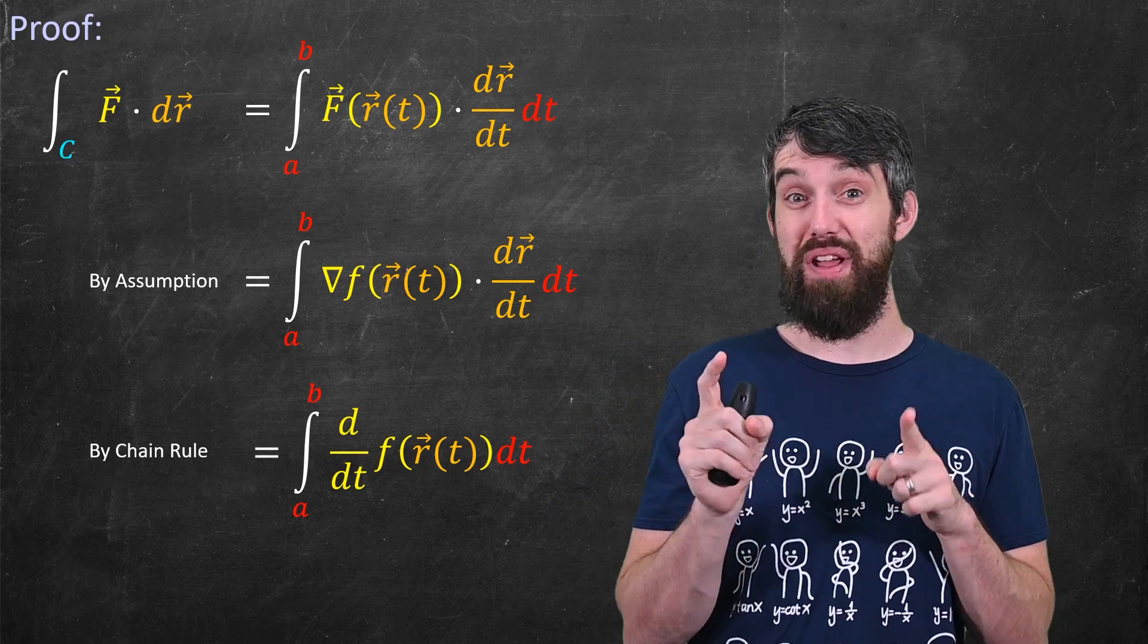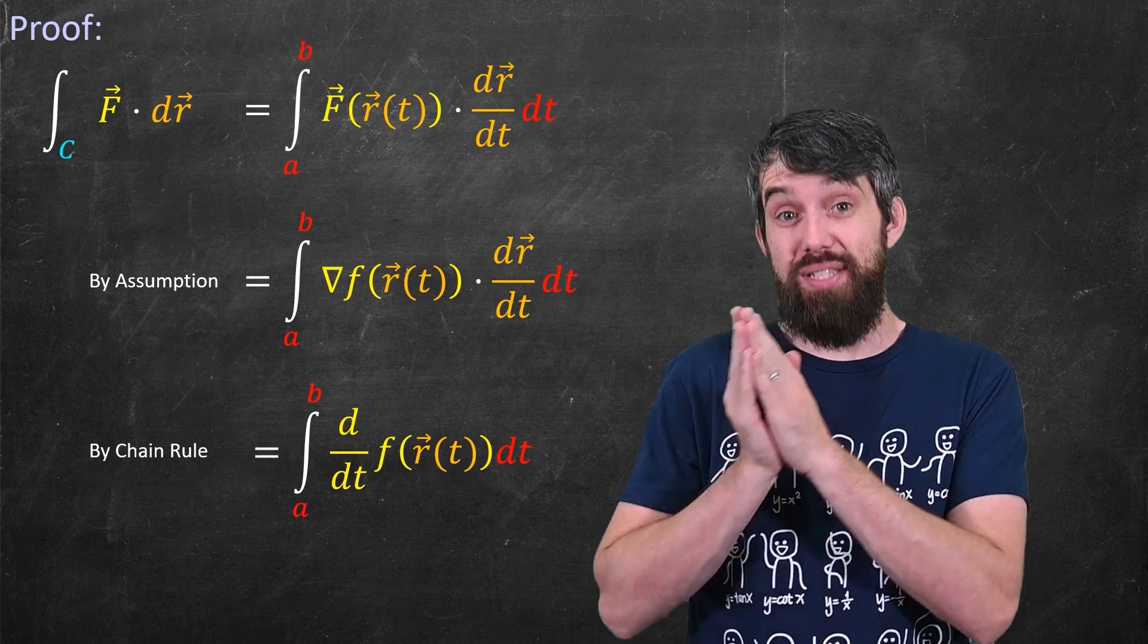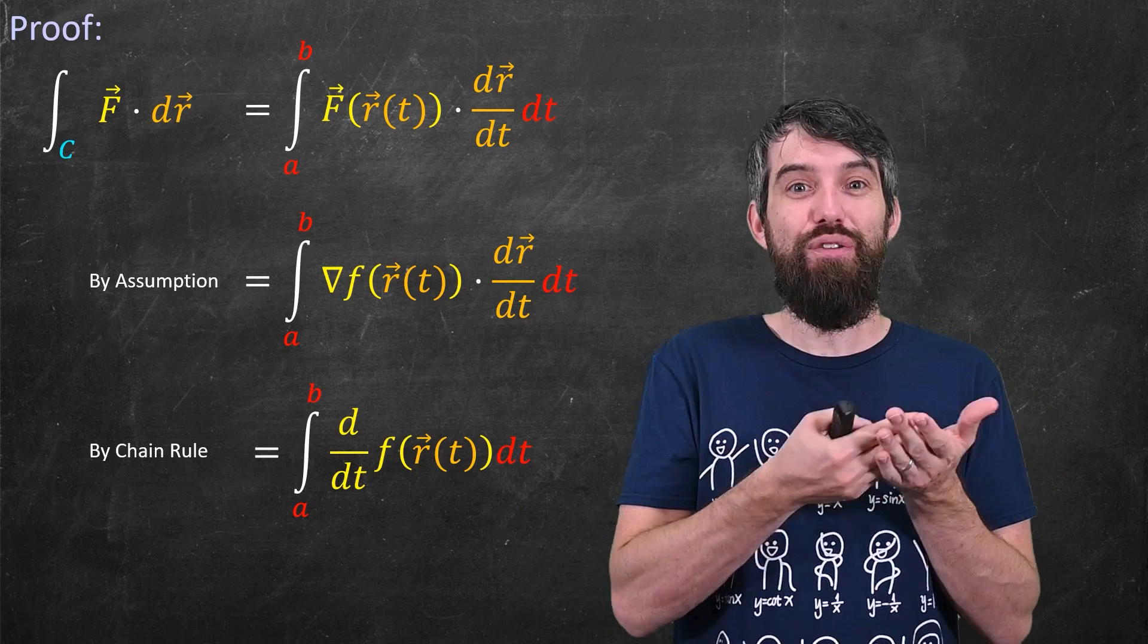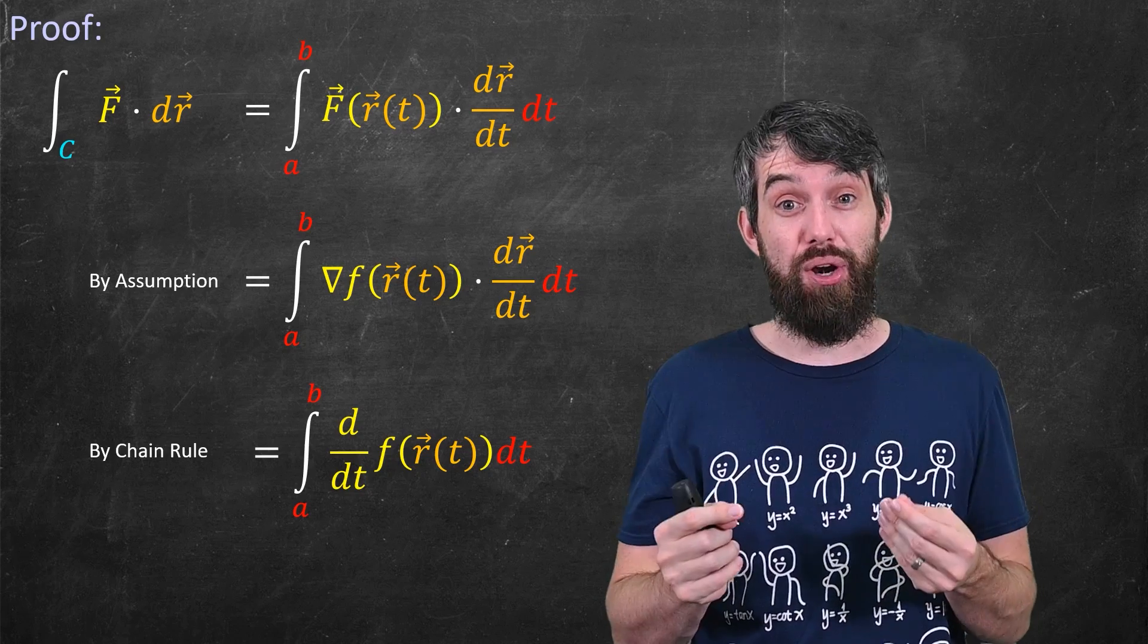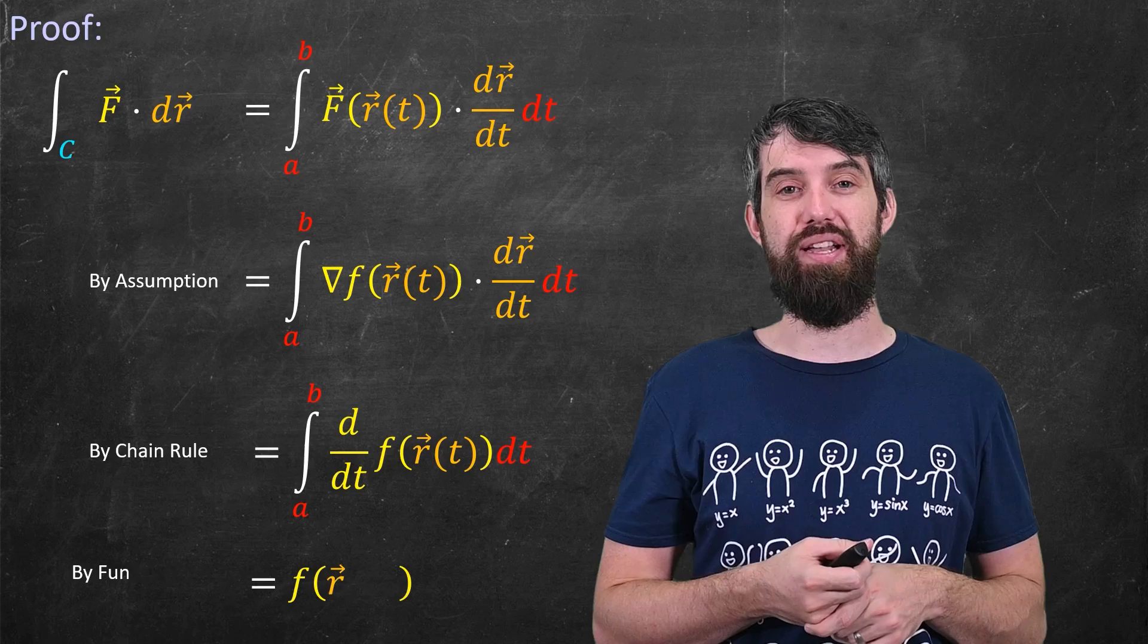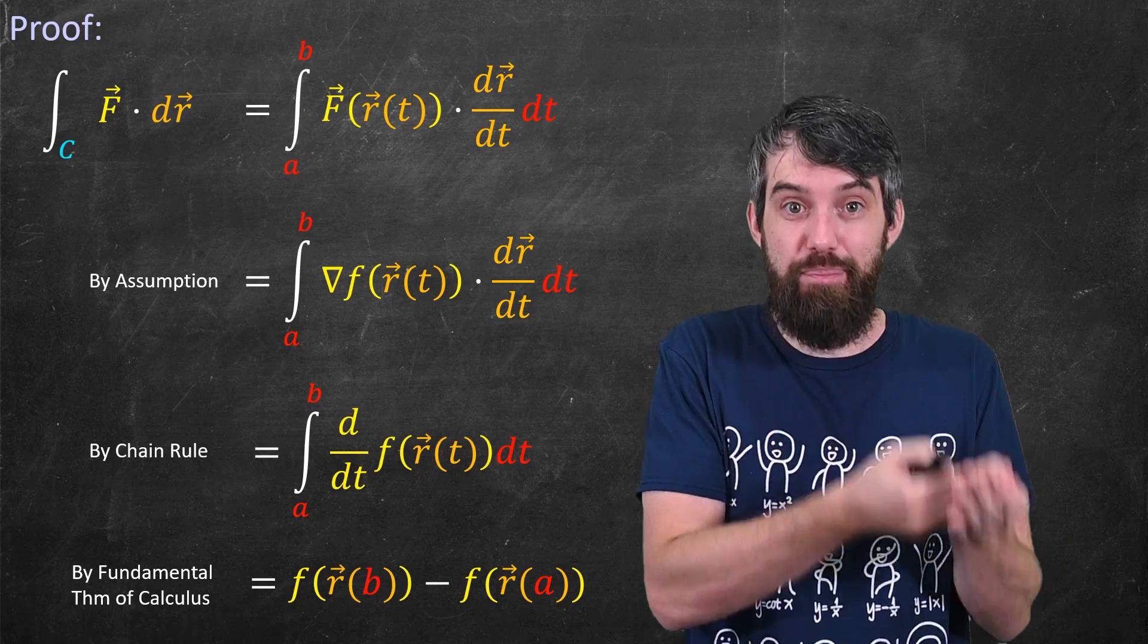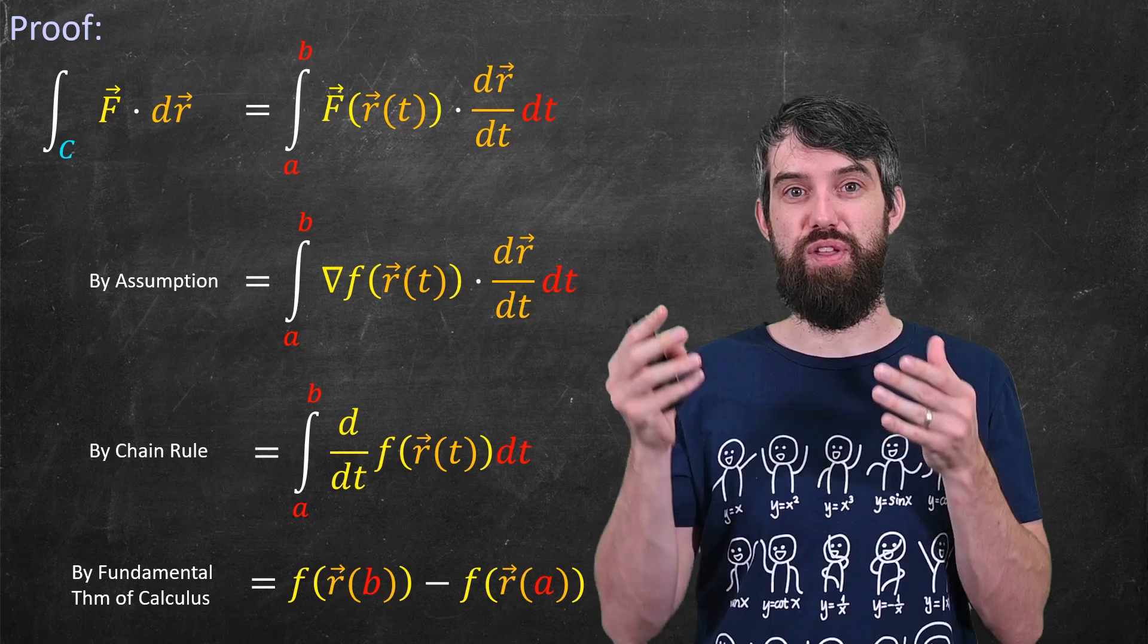Okay so now that we've done that chain rule trick from multi-variable calculus, now we can go to single variable calculus because I have a single variable integral and it goes back to dt. I have a single variable derivative d/dt. I can just do single variable calculus stuff here. In particular, the integral of a derivative by the fundamental theorem of calculus is just plug in the endpoints. So it's the function f(r(t)) evaluated at b and then subtracting off that evaluated at a. That is the fundamental theorem of calculus.